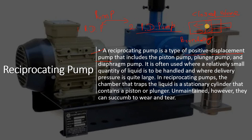If you change the boundary with a reciprocating action — backward and forward motion — that is the reciprocating pump. If you change the boundary with rotary motion, that is the rotary pump, such as a gear pump, vane pump, or lobe pump.